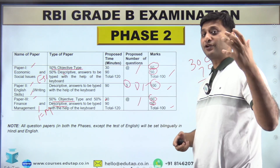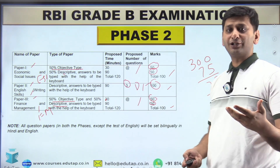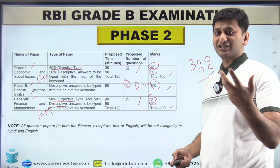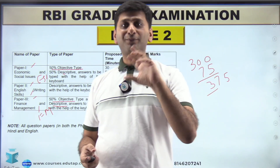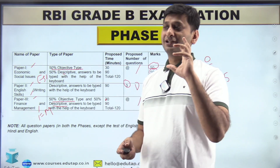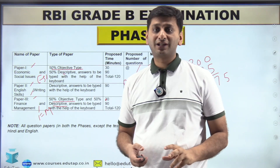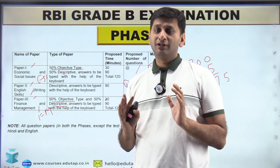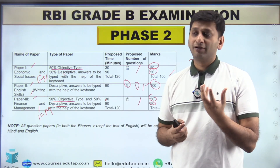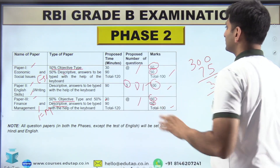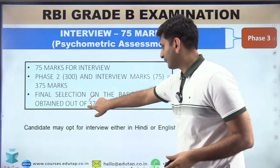Overall, phase two is more aligned towards descriptive. Out of 300 marks, 200 are descriptive. Phase three is an interview, more of a personality test along with knowledge assessment. However, RBI interviews are known for unpredictability — some people receive very low scores of 5-10 out of 75 while others score 50 or 70.